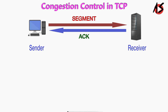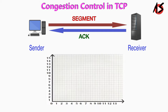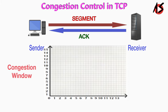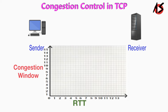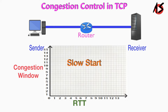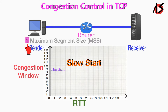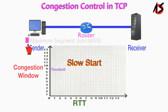For better visualization, we will also draw the graph of congestion window versus RTT. TCP uses the slow start algorithm and takes the congestion window to one maximum segment size. This means the sender can send only one segment. After the first acknowledgment arrives, the size of the congestion window is increased by one, which means the congestion window is now two.